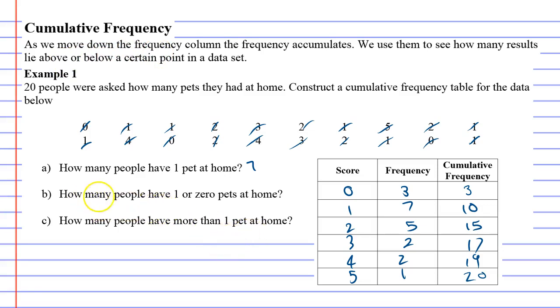How many people have one or zero pets at home? We've got three with zero pets and seven with one pet, so 3 plus 7 is 10. That's one way of working it out. The other way is to look at the number of people with zero or one pets at home, and if we look at this point where it's accumulated to 10...